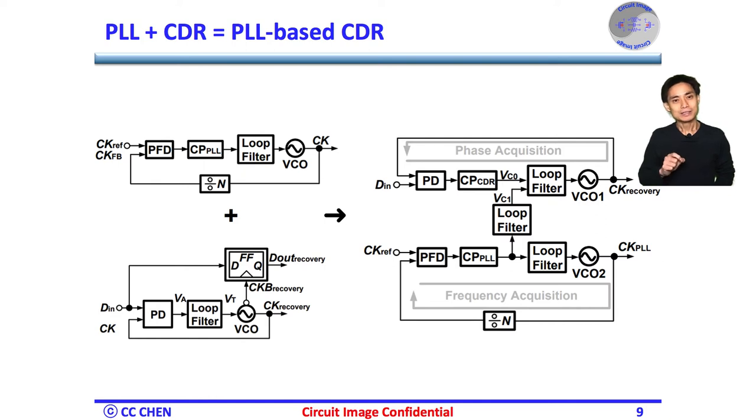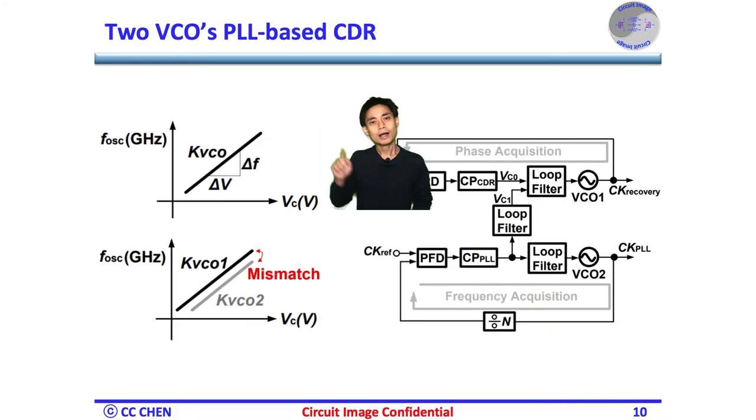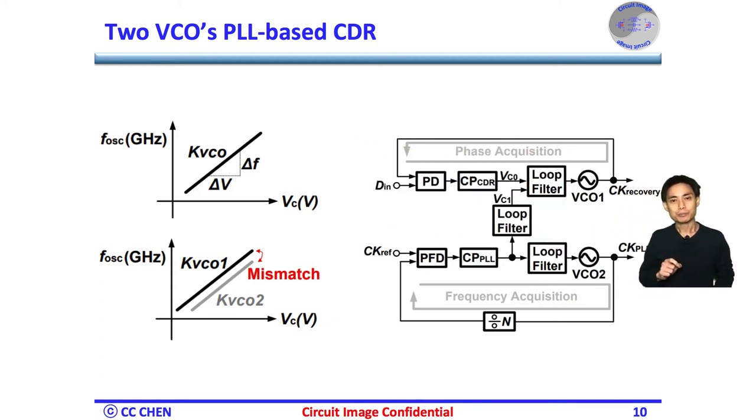Then, this PLL-based CDR seems straightforward, but there are a few assumption images here. Think about the issues for 5 seconds. Right, the first issue is the mismatch in both VCO's characteristics, that is output frequency versus control voltage. Any mismatch between the VCO1 and VCO2 could still generate different oscillation frequencies, even though the two VCOs share the same control voltage VC1 for frequency tuning.